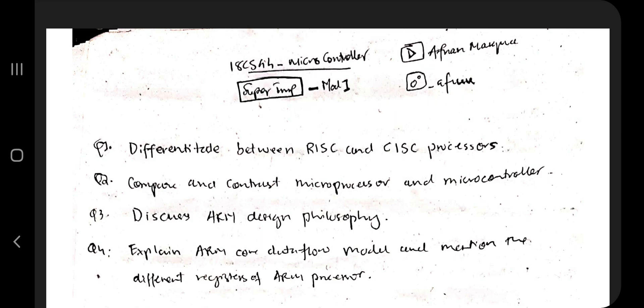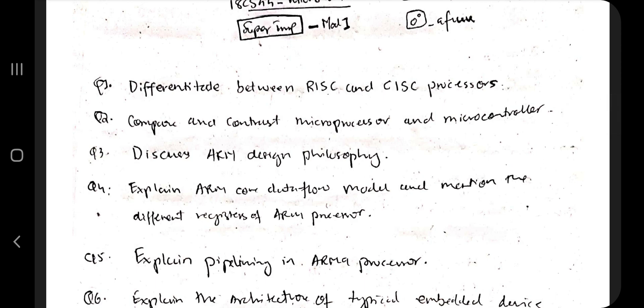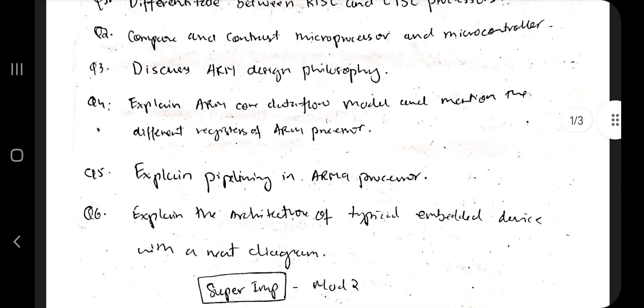Let me give you a brief overview of what the first module is about. It's basically an introduction regarding what embedded systems are. In that, there are many types of architectures and different microprocessors and controllers are used. ARM design philosophy has some key points that you have to mention, and what are the different architectures and typical devices used—those you have to explain mainly.